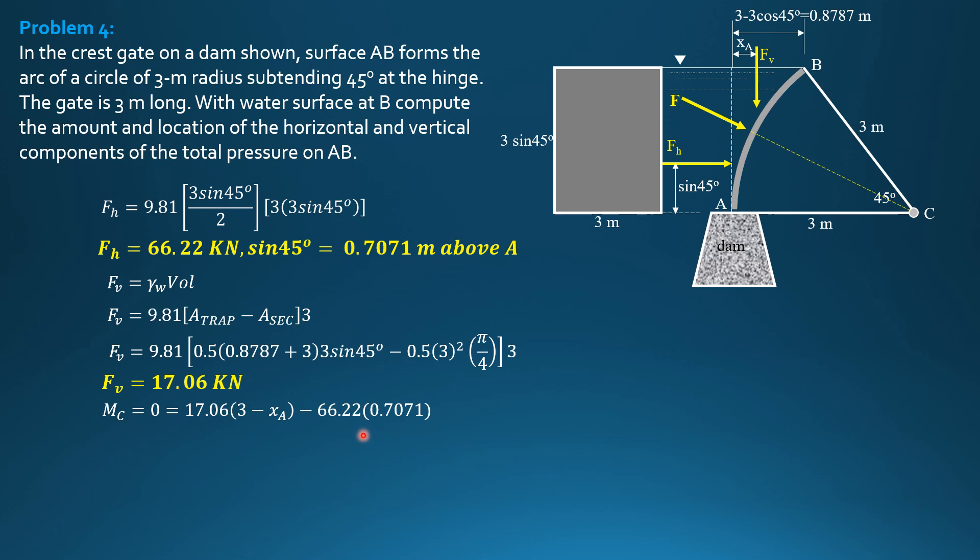So solving for X_A, 17.06 times 3 minus 66.22 times 0.7071 divided by 17.06. So X sub A is 0.2553 meter. Therefore, F_V is 17.06 kN, 0.2553 meter to the right of point A. So that's it for this problem.